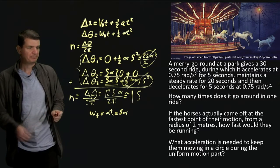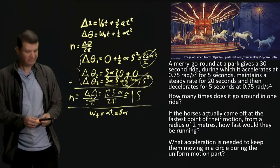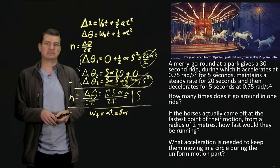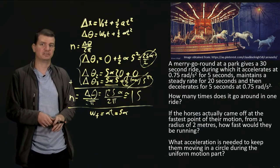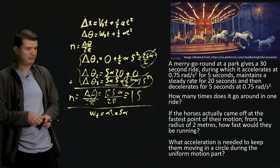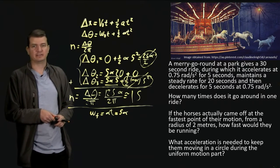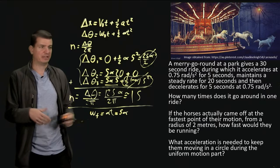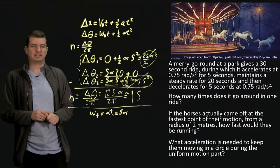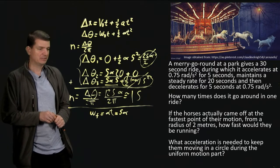The next part asks: if the horses were actually flying off the carousel, how fast would they be moving in a straight line? Once they detach, Newton's laws say they continue moving in a straight line with no forces. To find this, we use the fact that when moving in circular motion with angular velocity omega, we can find the tangential component of velocity — the linear equivalent — by multiplying by the radius r.